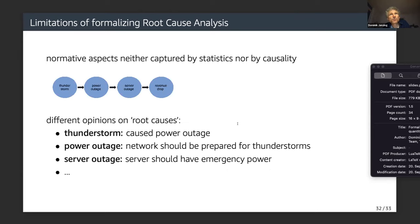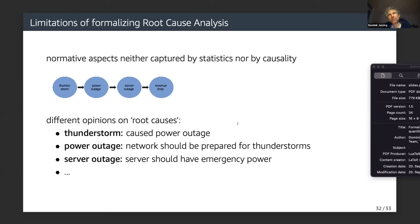There are normative aspects that are neither captured by statistics nor by causality. For the thunderstorm → power outage → server outage → revenue drop chain, there can be different opinions on root causes. Obviously the thunderstorm is one, but you could also say the power outage — the network should be prepared for thunderstorms — or the server outage — the server should have emergency power.